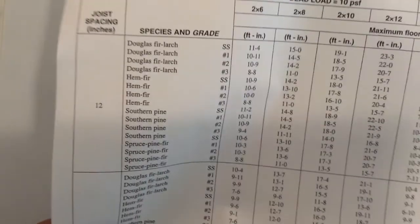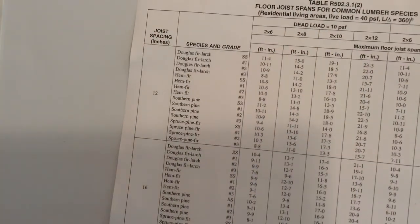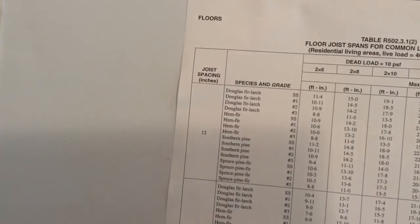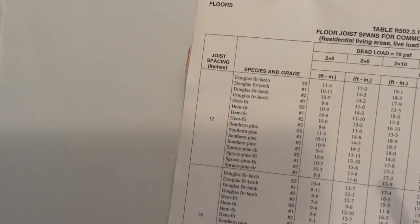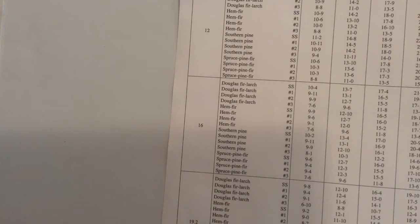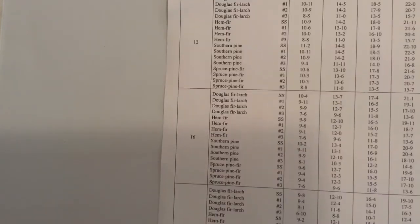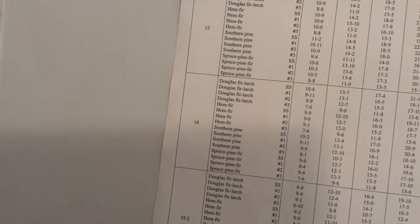The next things listed on our span chart are joist spacing. We see spacings of 12, 16, 19.2, and 24 inches — these are the spacing of our structural members on center. Depending on the spacing chosen, that also influences the stiffness of our floor. Generally speaking, we usually set things on 16-inch centers.